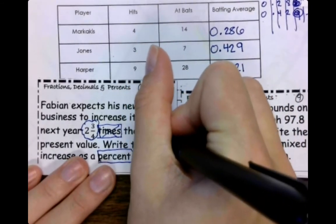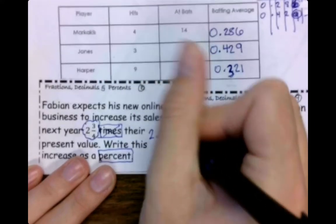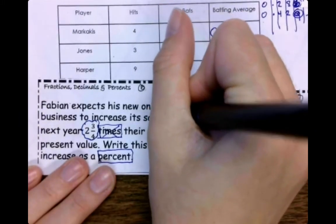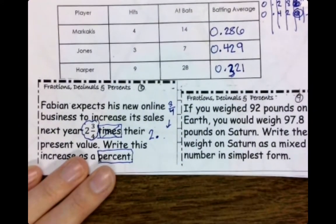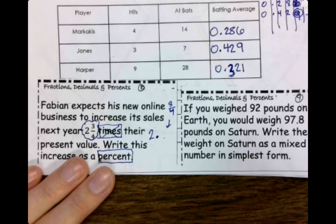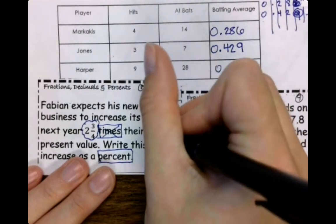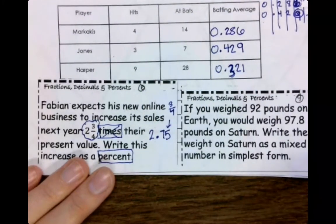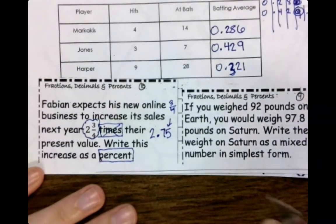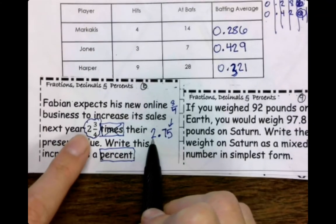So break it apart. We're going to have two point something, right? That fraction is going to be the decimal part. So what is three-fourths as a decimal? Point seven five.